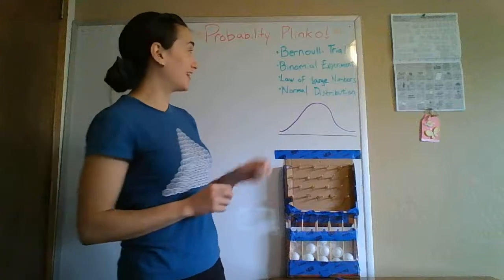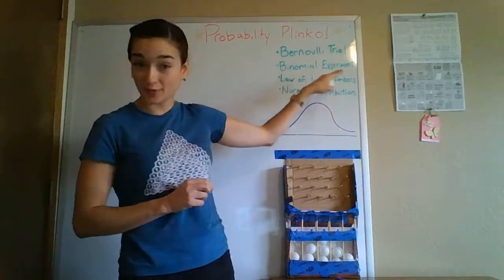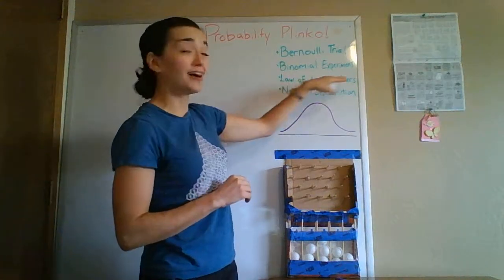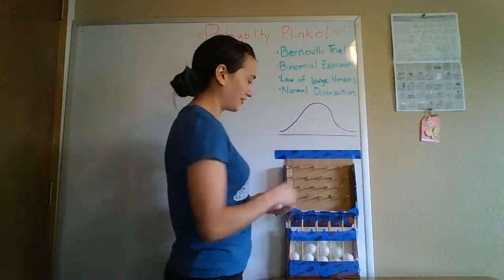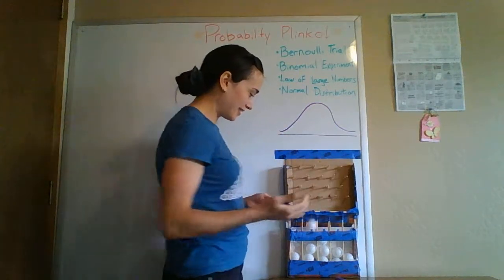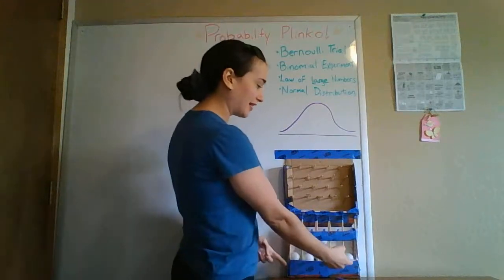And the cool thing is, when you have repeated Bernoulli trials which form a binomial experiment, and you sample it enough times, it actually forms a normal distribution, which is this bell curve. And you can see that most of the balls are landing in the middle, but some are landing on the end.